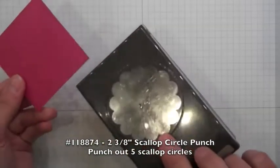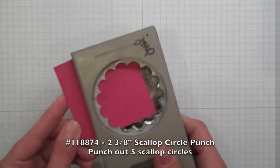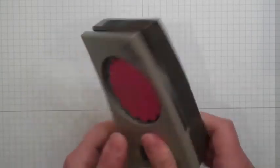So let's show you how to make these paper flowers. First of all, you're going to take the 2 1⁄3 inch scallop circle punch and you're going to punch out five of them.